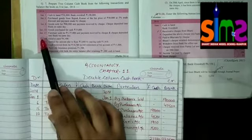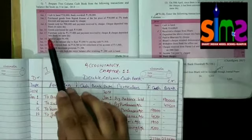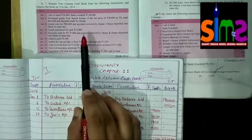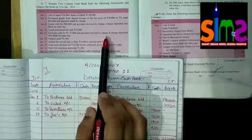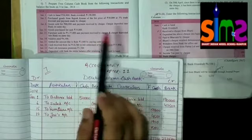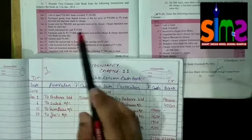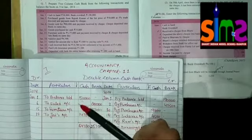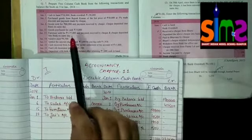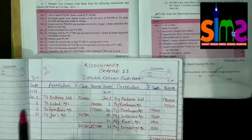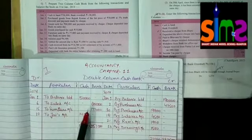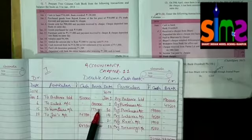The next transaction is on January 15th: furniture sold for 1,77,000, payment received by cheque, and cheque deposited into the bank on the same day. Money is coming in, so it will be recorded on the debit side: to furniture account, amount 1,77,000 in bank column.